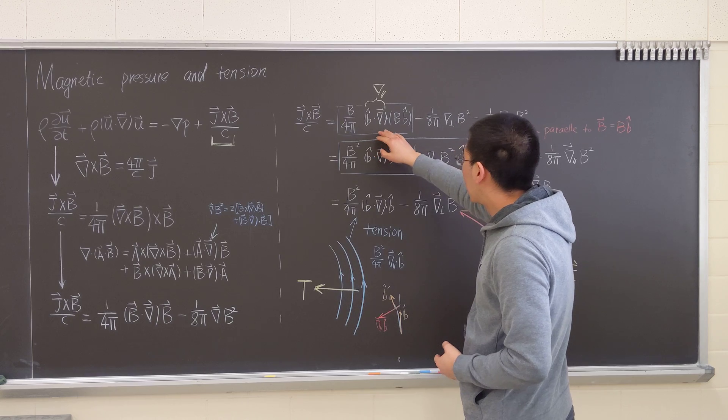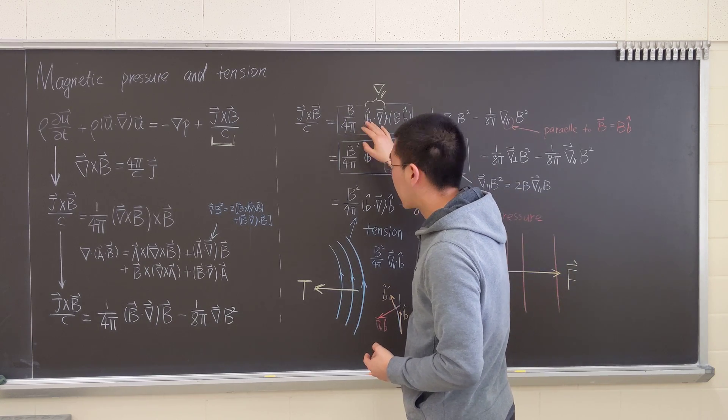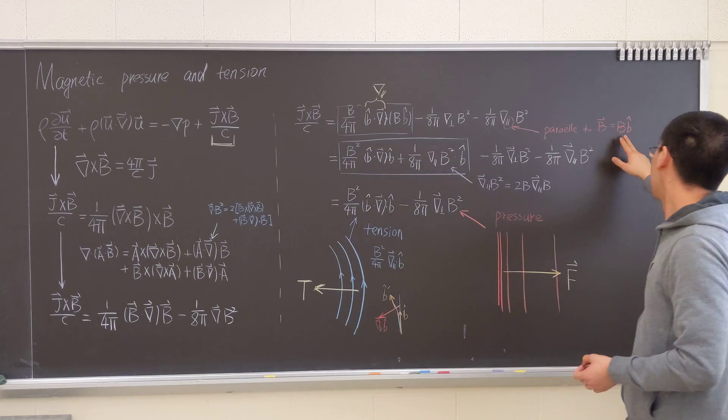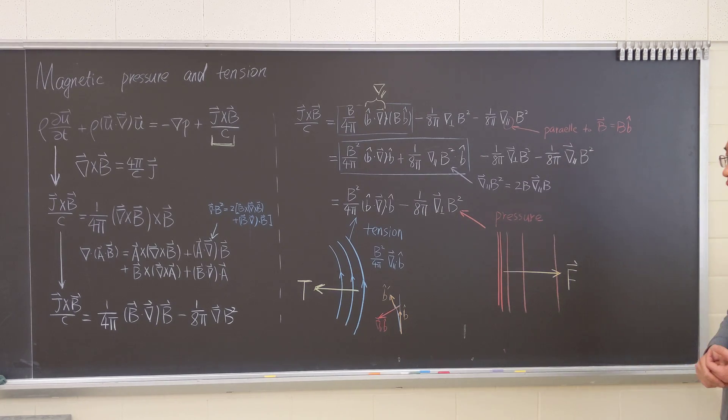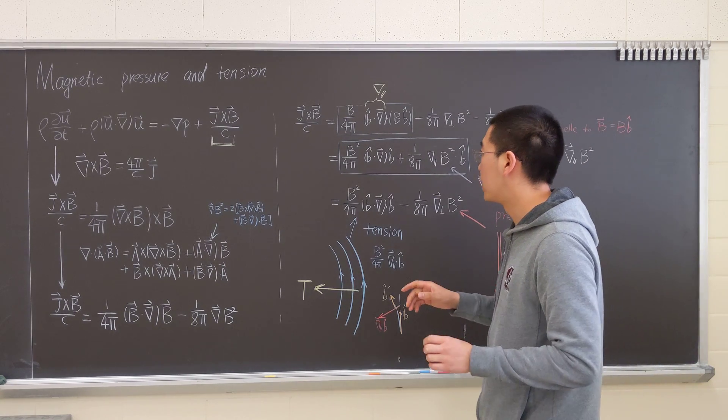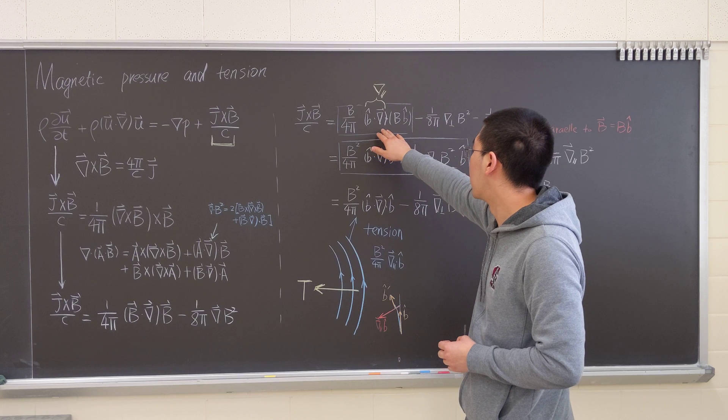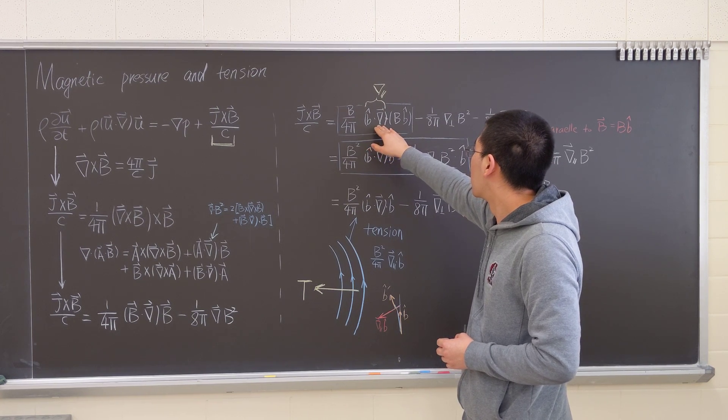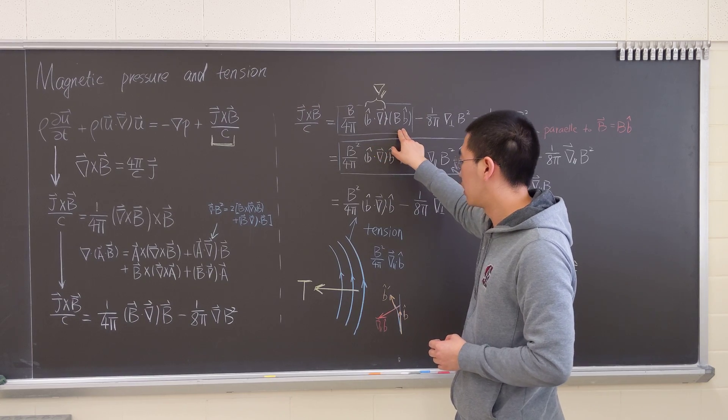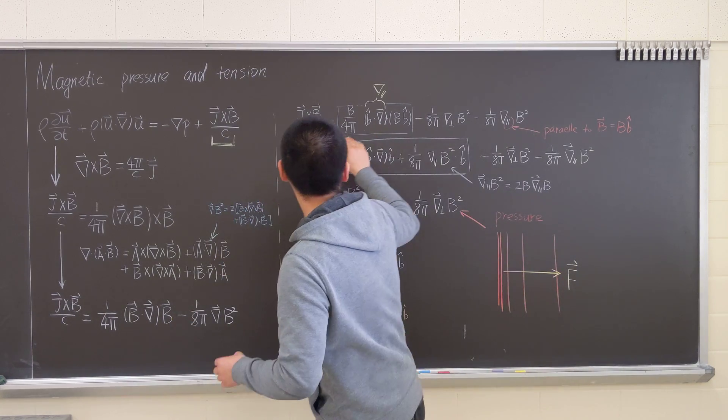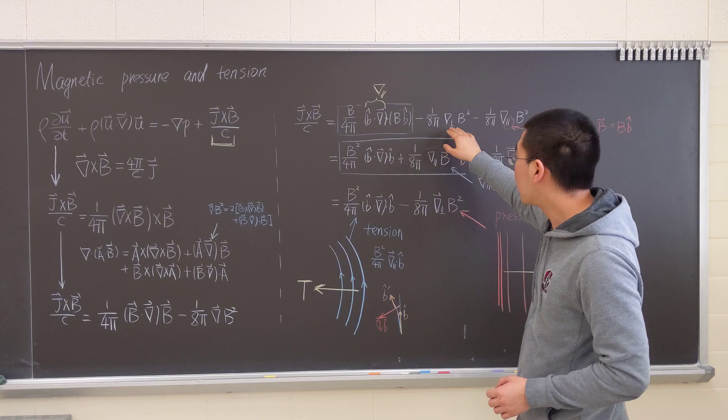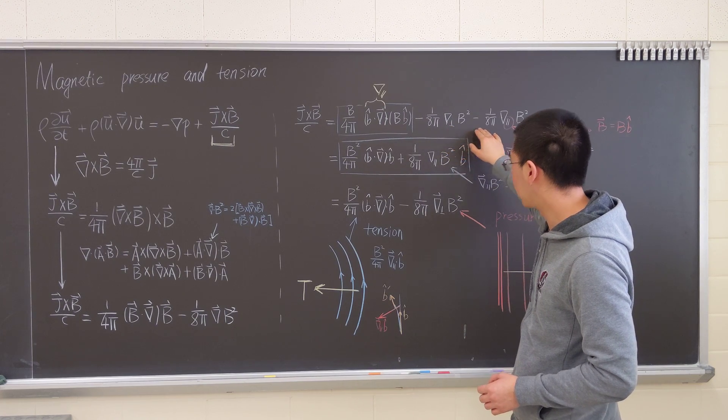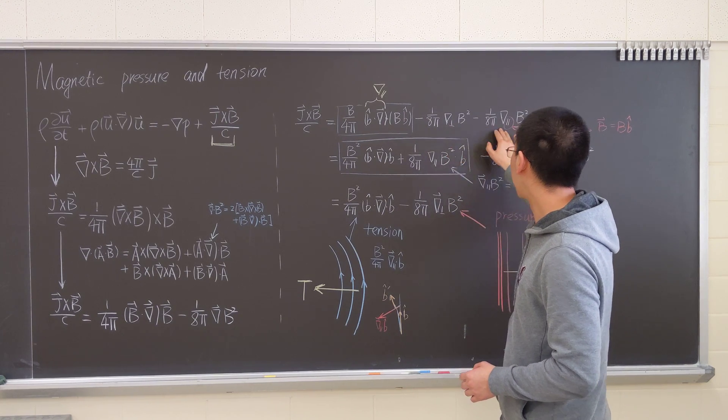We can make B vector B into B times B hat. B hat is just a unit vector to illustrate a point I will talk about later. So it will become like this. So this term will become this. And we decompose the gradient to two components, perpendicular and parallel.